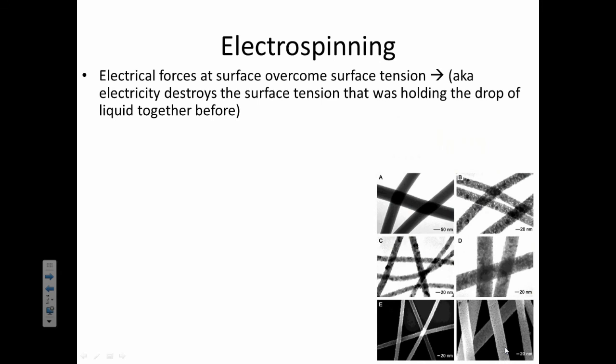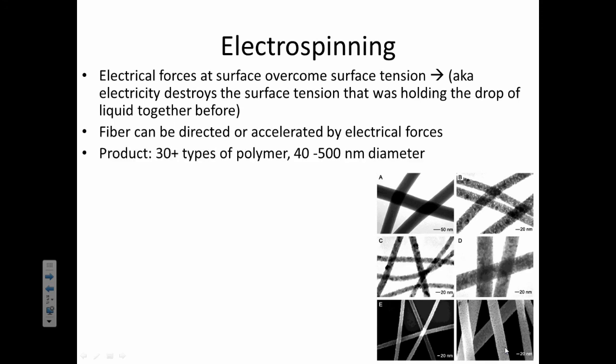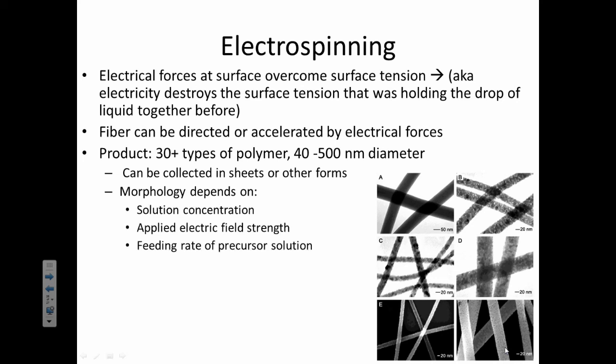Finally, there's electrospinning. Electrospinning is pretty cool, and it basically requires that electrical forces overcome surface tension. If you run an electric current through a fluid, you can destroy the surface tension that was once holding it together. They can use this to create these big fiber networks. I'll show you an animation of what that looks like. You can have lots of different polymers that this works with. They can have very small diameters. You can collect them in these fiber sheets, and the shape of them really depends on what kind of liquid are you working with, what's the concentration, how much electric field did you apply, and how fast were you feeding that solution through.